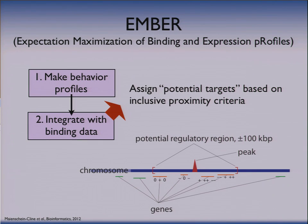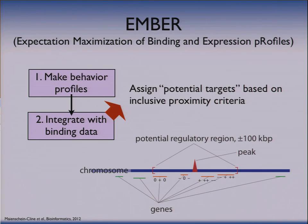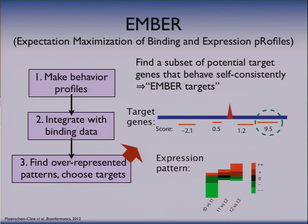The next step — we still stick with the proximity idea that there has to be some sort of proximal effect, but we try to be as inclusive as possible. So we say all the genes within, say, 100,000 base pairs — I'm going to assume that one of those genes, maybe, is actually being targeted; the rest are not. But I'm hoping that I'm getting all the actual targets in this region. So I'm going to call these potential gene targets that we're going to then call in the next step to try to identify the actual gene targets.